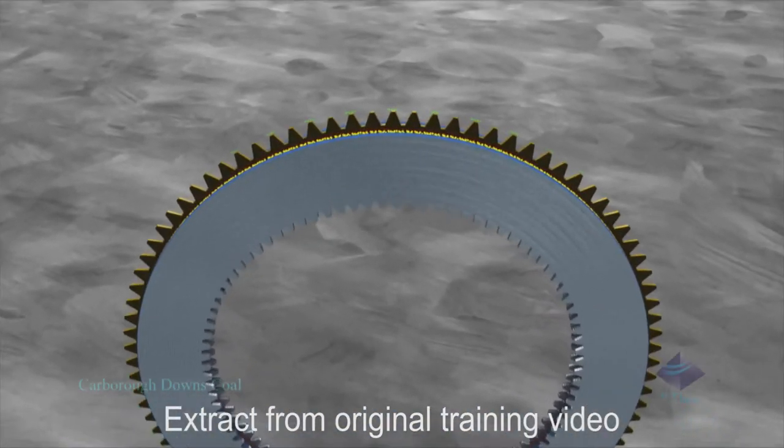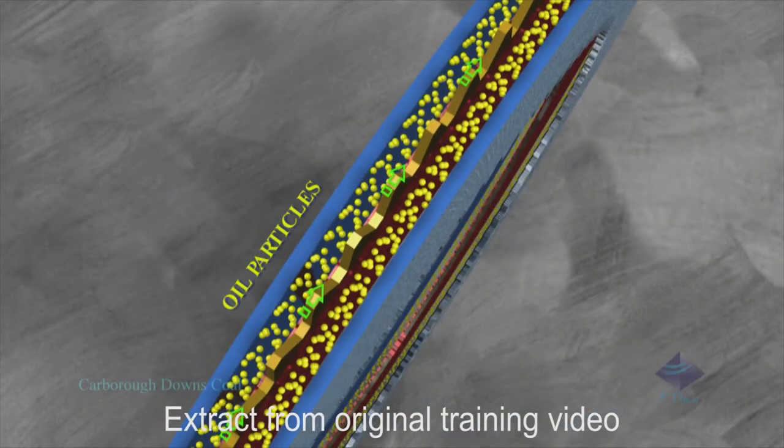A film of oil is deposited on the surfaces of the fixed and rotating clutch plates.